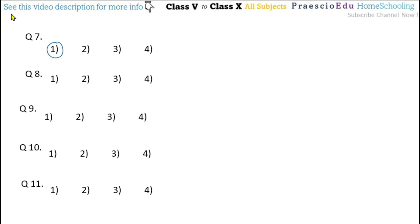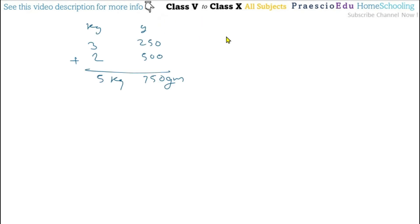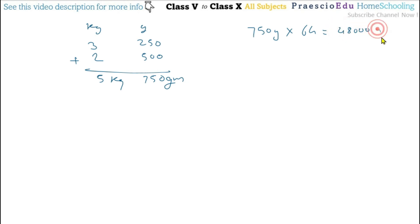Question number 8: What is the weight of pulses packed in 64 bags, each containing 750 grams of pulses? We multiply 64 by 750 to get 48,000 grams, which after dividing by 1000 gives 48 kg. This is given in option number 2.